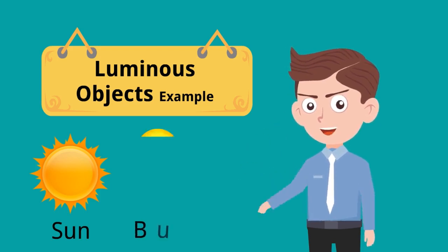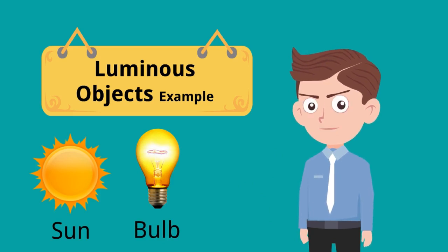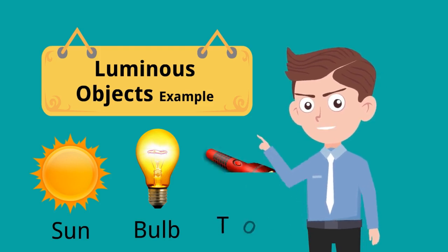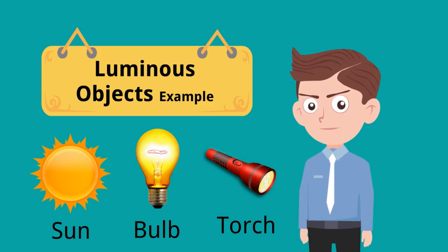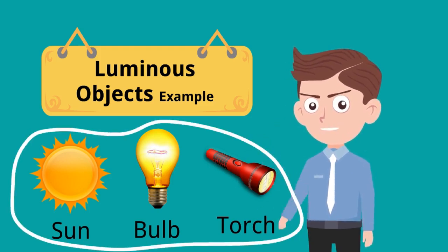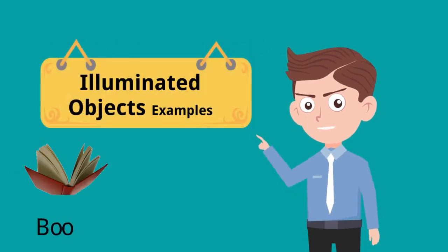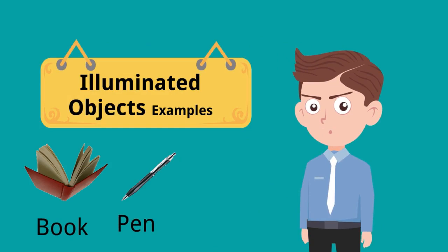A bulb is also a luminous object — at night we switch on our bulb and we are able to see, so the bulb gives light. In the same way, a torch gives light, so a torch is a luminous object. These are all known as luminous objects.